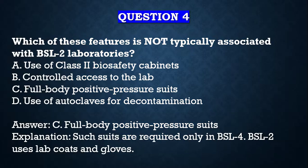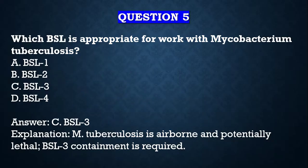Question number four: which of these features is not typically associated with BSL2 laboratories? A) Use of Class 2 biosafety cabinets, B) Controlled access to the lab, C) Full body positive pressure suits, D) Use of autoclave for decontamination. The answer is C, full body positive pressure suits — we only need those in BSL4. For BSL2, you only use lab coats and gloves.